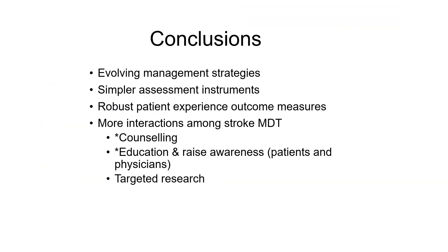In conclusion, the management strategies for spasticity in both the upper and lower limb are evolving. The roles of neurectomy, highly selective neurectomy, and nerve transfers are improving with more work still to be done. However, the measurement of outcomes has been quite unsatisfactory with current instrumentation — more refined instruments are needed to measure targeted interventions rather than just global outcomes. It is also important to understand patient experiences, as cognitive load and spasticity significantly affect function. Greater interaction within the multi-disciplinary team is required, along with counseling, education, and targeted research to gather evidence for the importance of surgery in post-stroke spasticity.